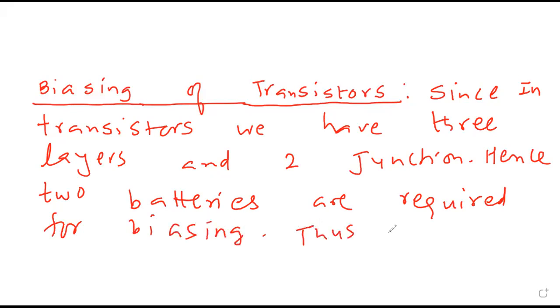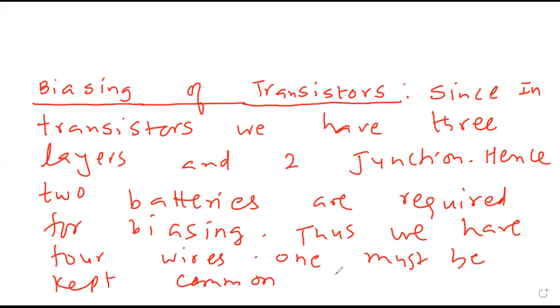Thus we have four wires. One must be kept common. Depending upon the common terminal we have three types of biases: base can be kept common or collector can be kept common.